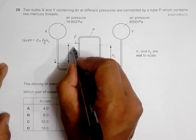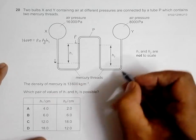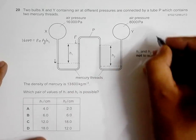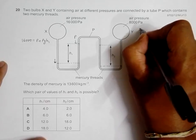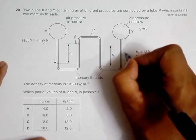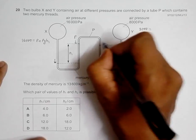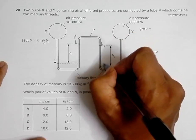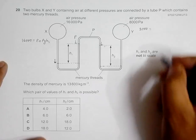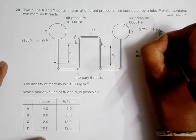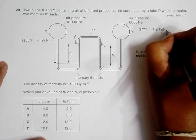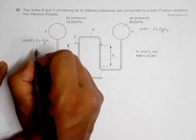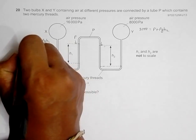In the same way, if I consider 8,000, pressure here should be equal to the pressure here plus pressure due to this column of mercury, so it should be P plus ρgh2.